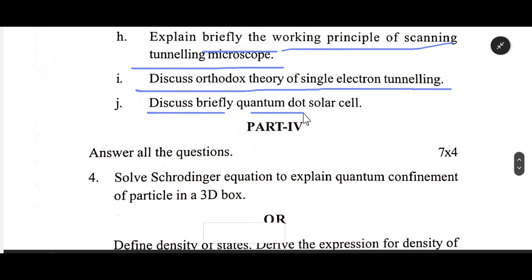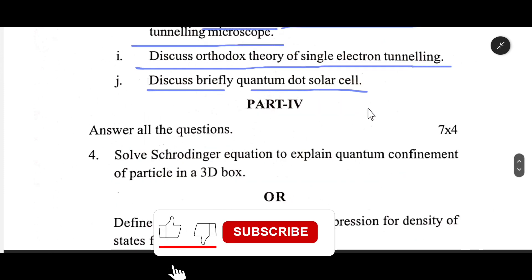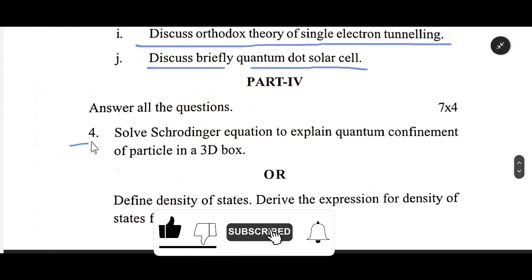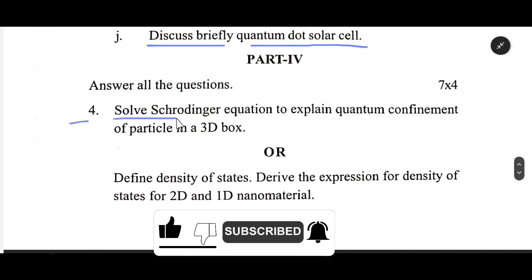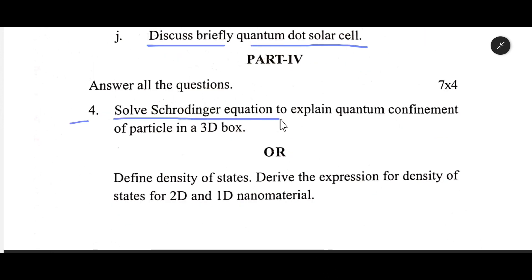Discuss briefly quantum dot solar cell. Number four: Solve Schrödinger's equation to explain quantum confinement of particle in a 3D box.